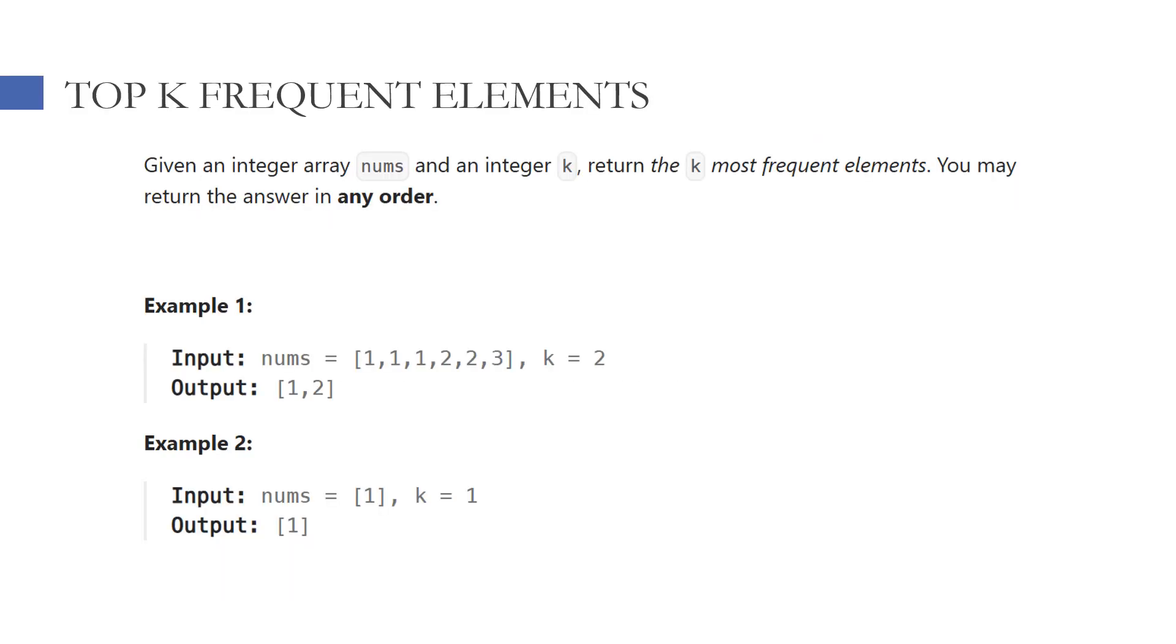We are given an array of integers and we need to find the k most frequent numbers. For example, given the input list of 1, 1, 1, 2, 2, 3 and k equal to 2, the output should be 1 and 2 because 1 appears 3 times and 2 appears 2 times.